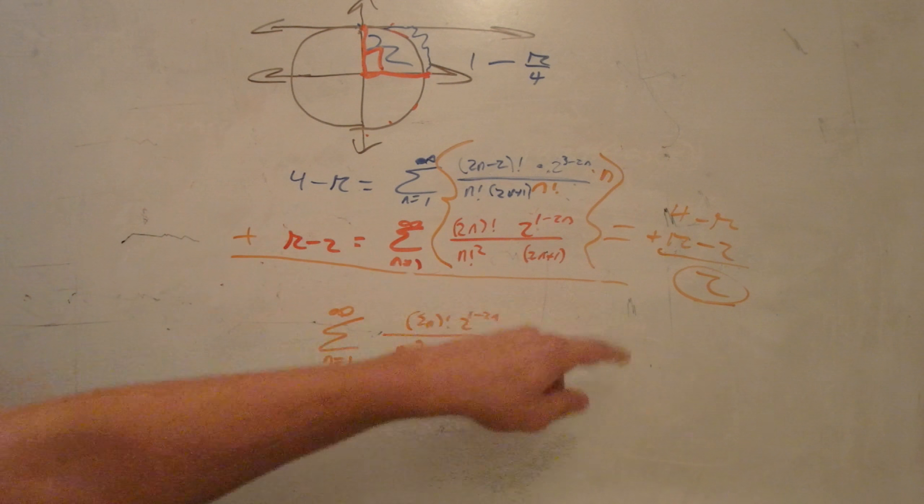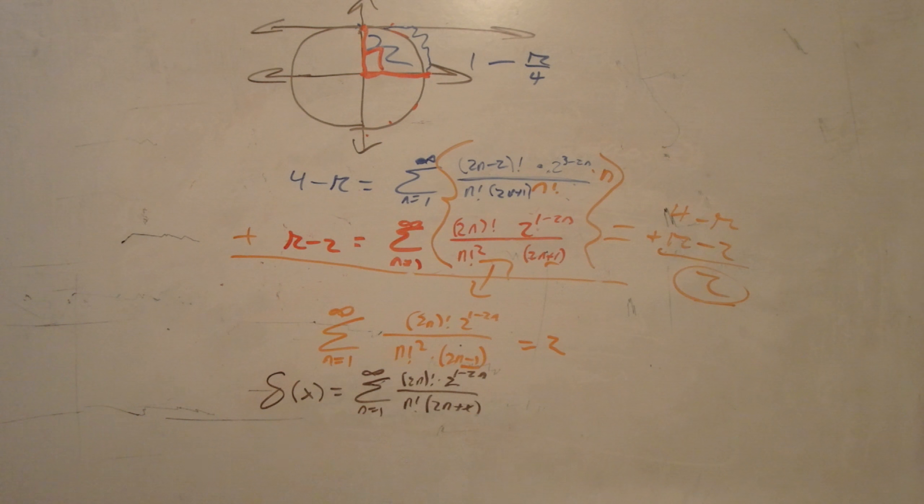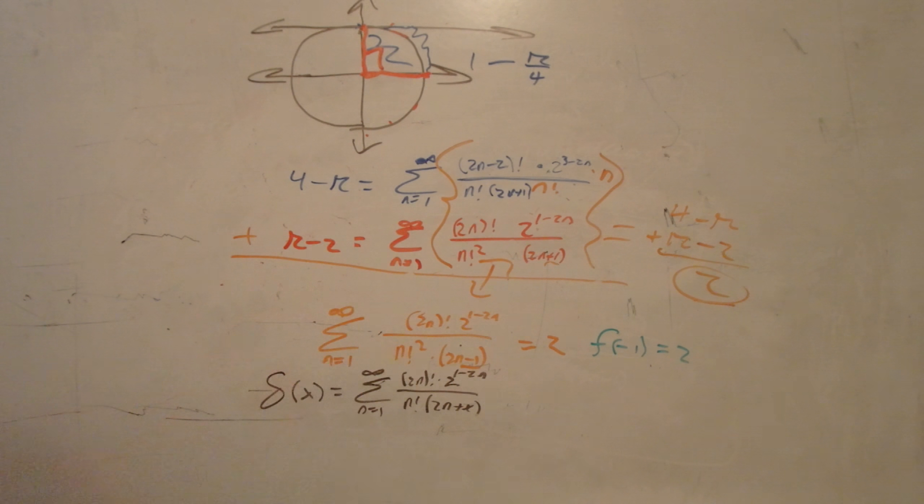Using these two equations, we prove that this is equal to 2. The interesting part, though, is that these are the same equation. This is a minus 1, and that is a plus 1, though. And that's the inspiration for this equation. We know that f of minus 1 is equal to 2, and that f of 1 is equal to pi minus 2.